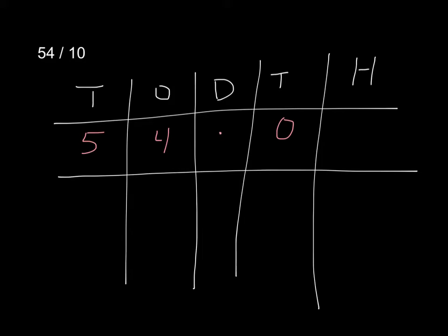Remember that using the place value chart, if I'm dividing by 10, I only need to slide it one place to the right. So my 5 tens turn into 5 ones, my 4 ones turns into 4 tenths, and my 0 tenths turns into 0 hundredths.